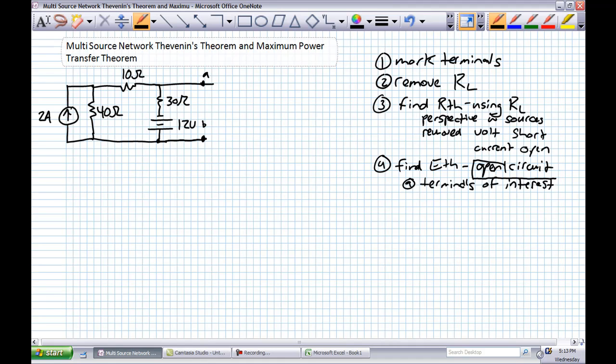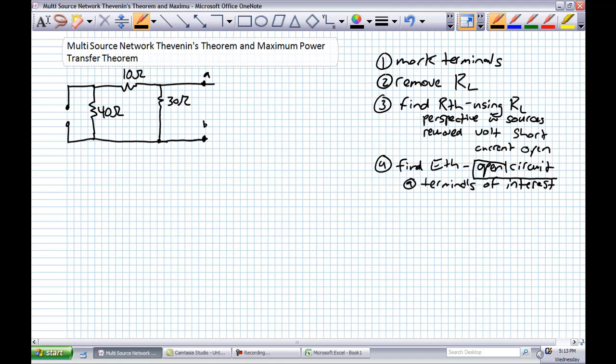We're going to do step two. We're going to remove our RL. And step three, find RTH with the resources removed. Remove our 12-volt source hooked up in that fashion with a short. Remove our 2-amp current source with an open. That's all it is. Find RTH. What's RTH? From this perspective here, from the perspective of the load resistor. To me, it looks like a 30 in parallel with a 10 and 40 in series.